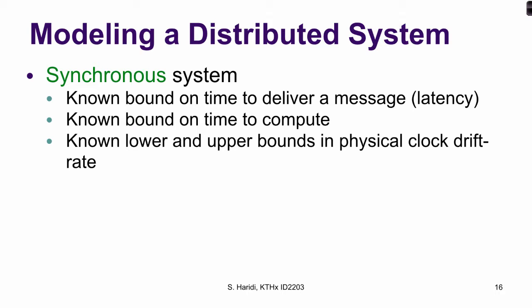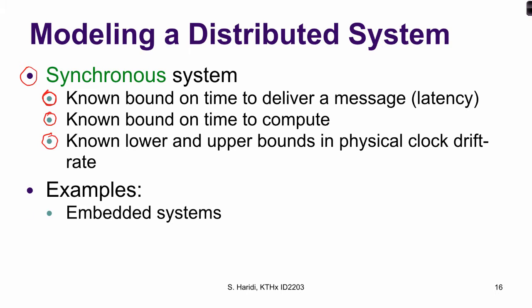In a synchronous system, we have quite a lot of knowledge. There are known bounds on the time to deliver a message, so the latency of the network is known. There are known bounds on how long a computation step takes on each process. And there are known lower and upper bounds on the physical clock drift rate. A typical example of a synchronous system is an embedded system, where you have control over the whole design, and you might have one central clock. That also includes systems-on-chip.